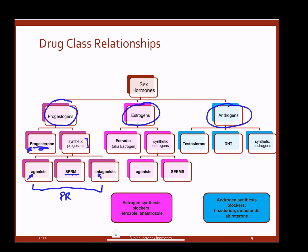With estrogens, we have the major physiological estrogen, estradiol. Since estradiol is by far the most physiologically relevant, we just call it estrogen. We have synthetic agents like synthetic estrogens, which can be agonists or selective estrogen receptor modulators — SERMs. Notably, we don't have antagonists at estrogen receptors, but what we can do is block the synthesis of estrogen to reduce estrogen levels.